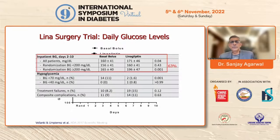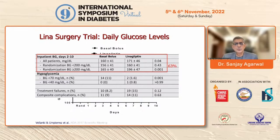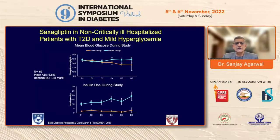Similar findings were seen with linagliptin: the proportion of patients with daily glucose below 200 versus ≥200 was similar between groups, and hypoglycemia rates were lower in the linagliptin group compared to insulin-only therapy. With saxagliptin, blood glucose levels were lower in the saxagliptin group, and the total amount of insulin required was lower in patients receiving saxagliptin plus basal therapy.